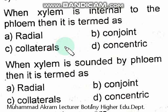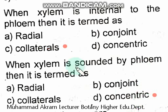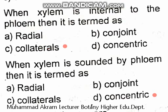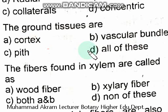When xylem is surrounded by phloem, it is termed as concentric. When xylem is internal to the phloem, it is termed as collateral. The ground tissues are cortex, vascular bundles, and pith — all of these.